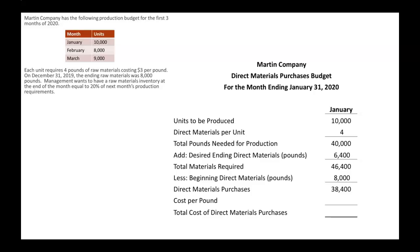We subtract that 8,000 from the 46,400, and we see that we need to purchase 38,400 pounds of materials. The next line is cost per pound — each pound of materials costs $3, as shown in the upper left. So if we need to purchase 38,400 pounds and each pound costs $3, we multiply those and we get our total cost of direct materials purchases of $115,200.